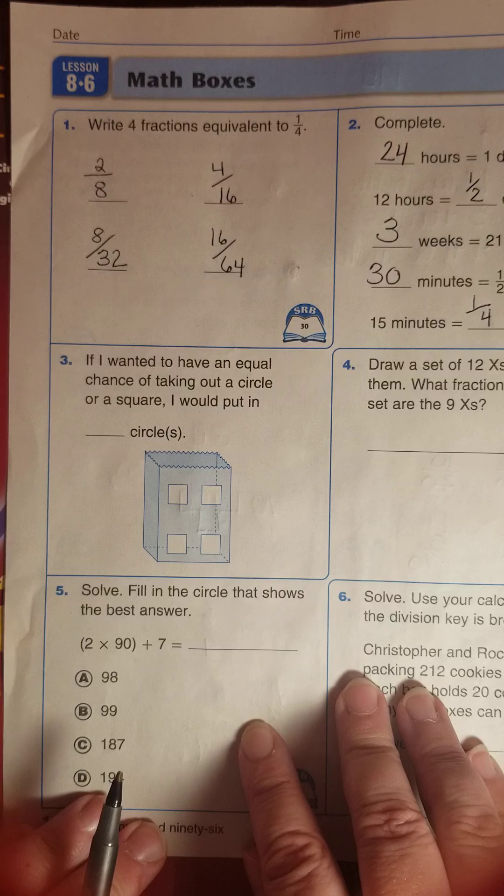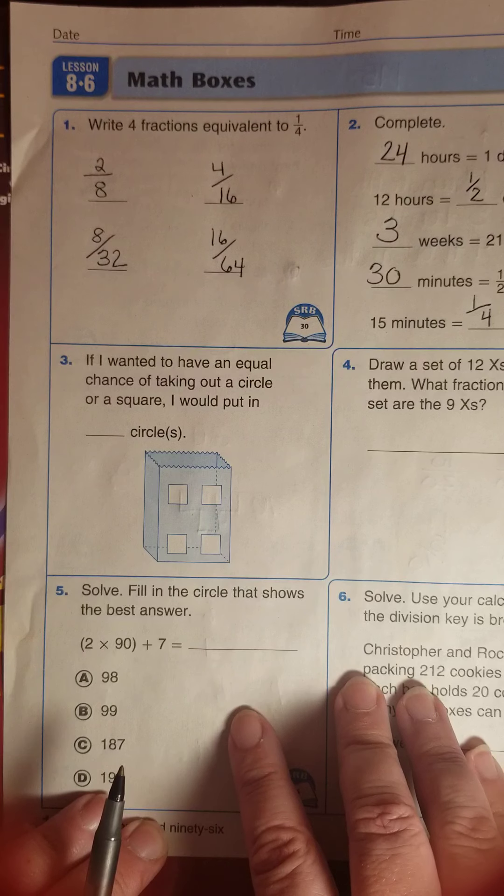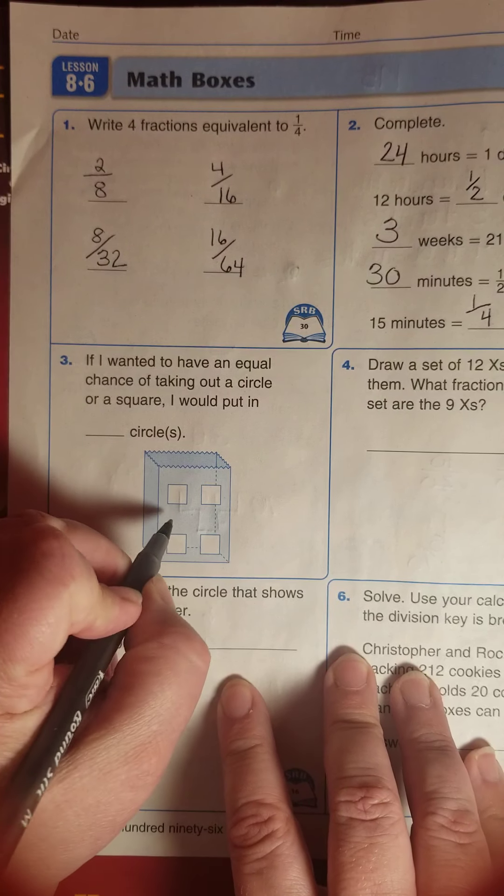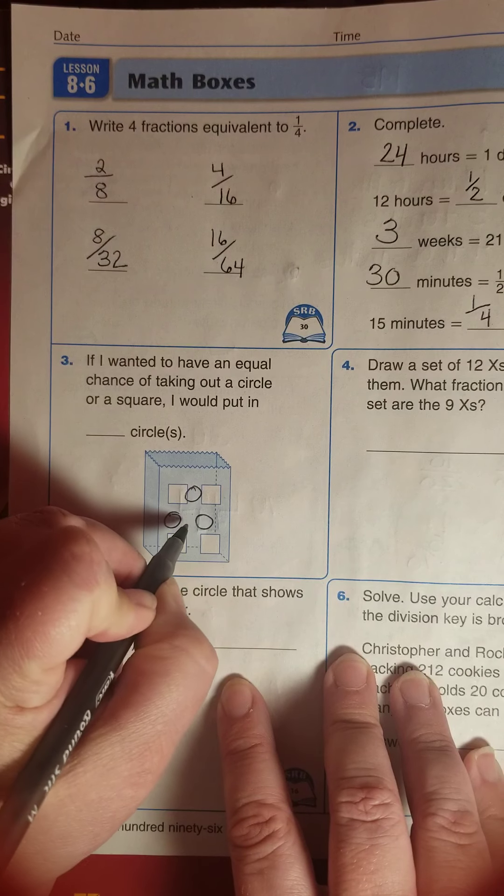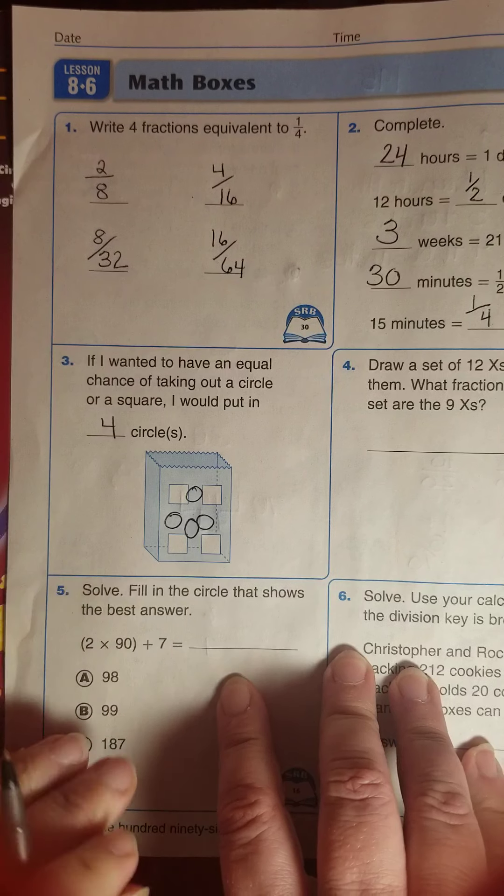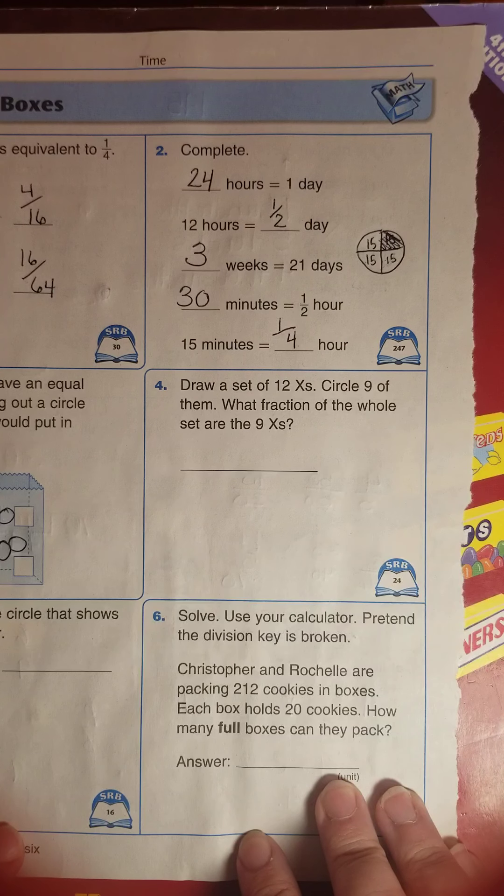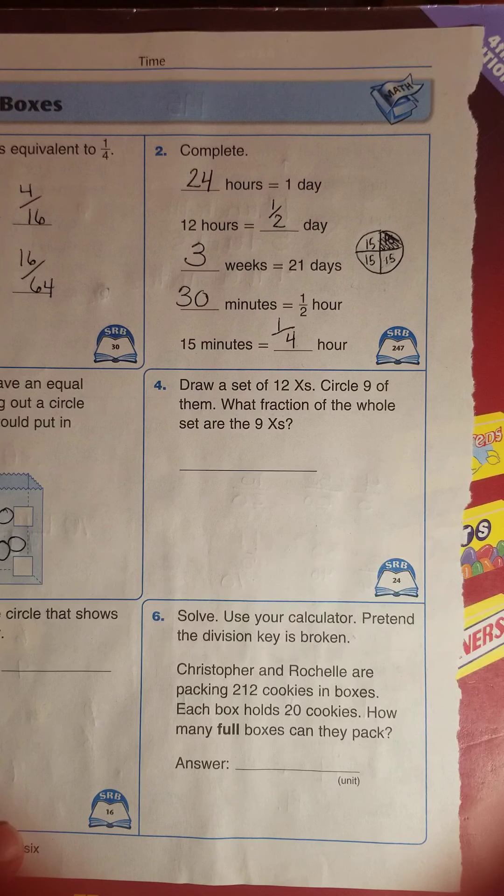Going on to number three. If I wanted to have an equal chance of taking out a circle or a square, what would I do? There are four squares in there. I want an equal chance, so in order to be equal, I better put four circles in there as well. Now the chances are equal.